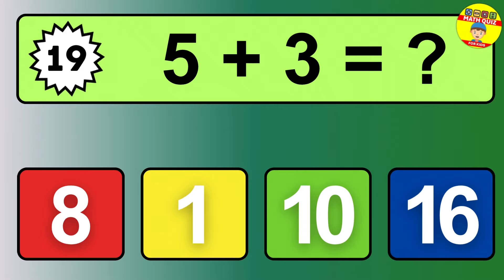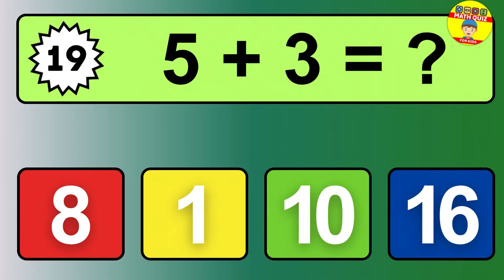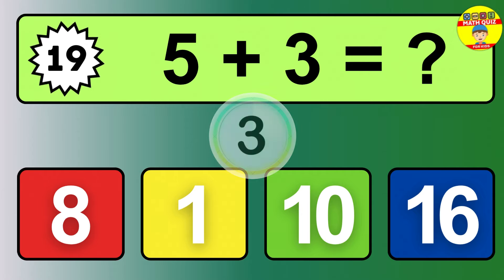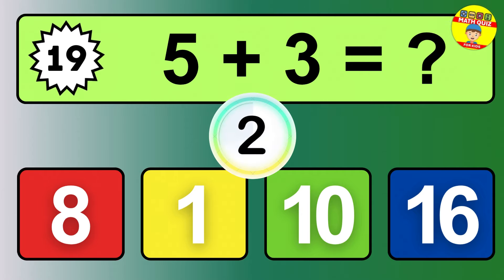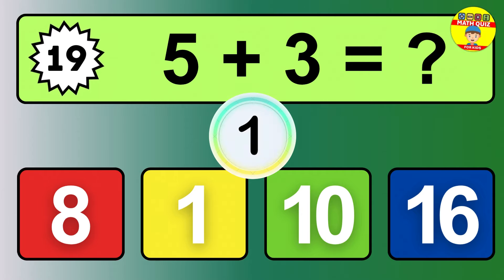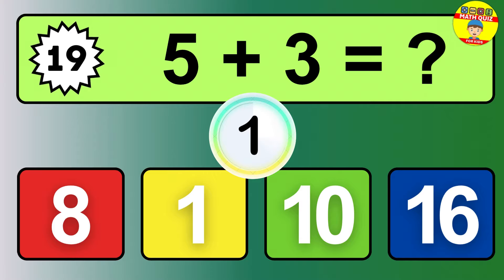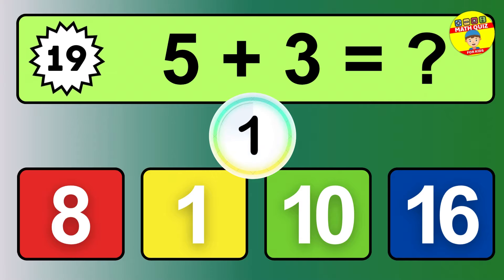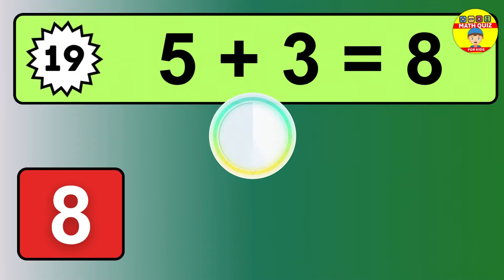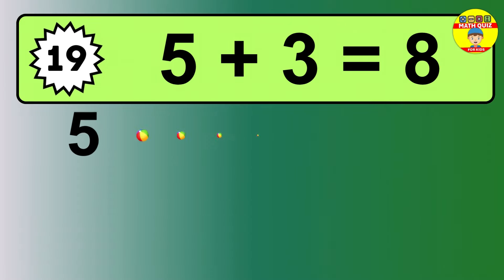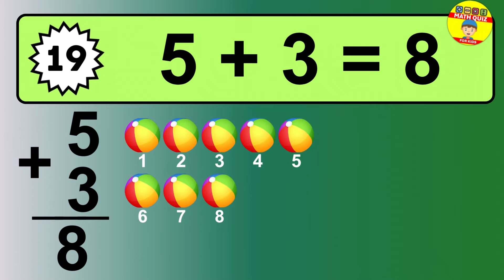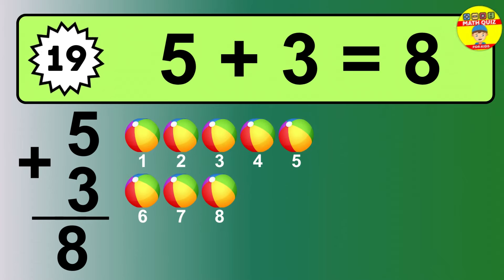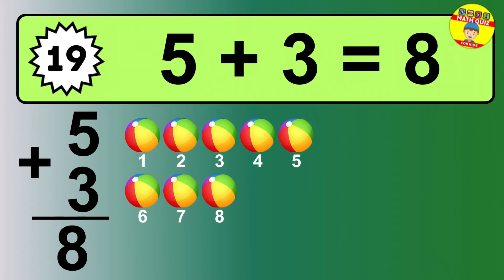Question nineteen: five plus three equals what? The answer is five plus three is eight.